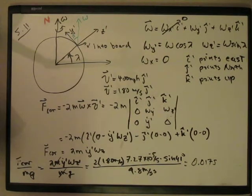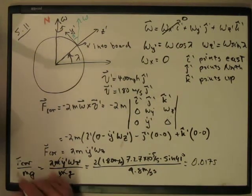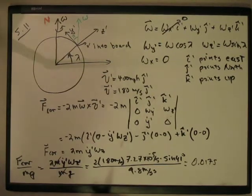If he was headed due north at this speed, find the ratio of the magnitude of the Coriolis force, that's what we're looking for down here, the ratio of the magnitude of the Coriolis force to the weight of the car. And then let's look for the direction also.